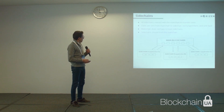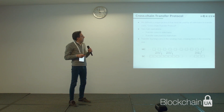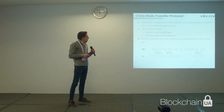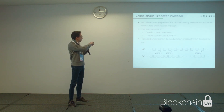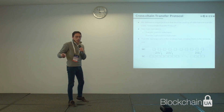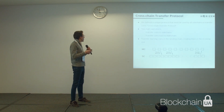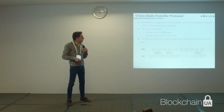It is clear that the main chain cannot track sidechains because it does not know them, but sidechains can track the main chain. We define a unique protocol used by all sidechains to transfer coins with the main chain. This protocol introduces two main operations: transferring coins from main chain to sidechain, and transferring coins from sidechain to main chain.